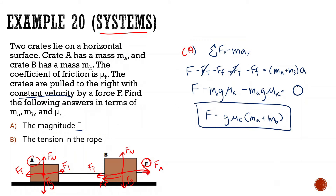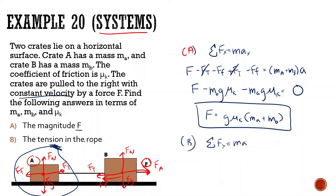Let's look at the next one. It says: what is the tension in the rope? To find the tension, we have to look at one free body diagram. Tension is in the x direction, so sum of all forces in x equals mass times acceleration. Looking only at this free body diagram, the only x force is force of tension minus force of friction equals mass times acceleration.